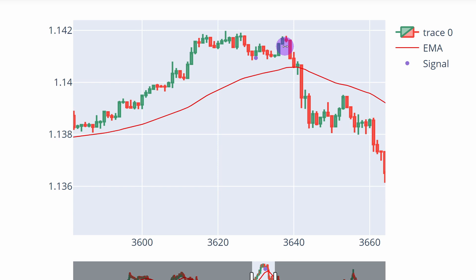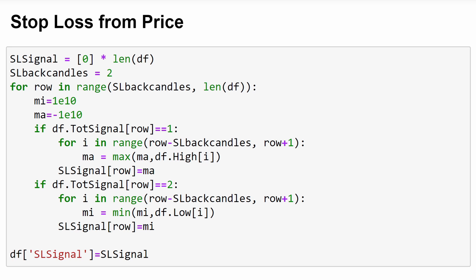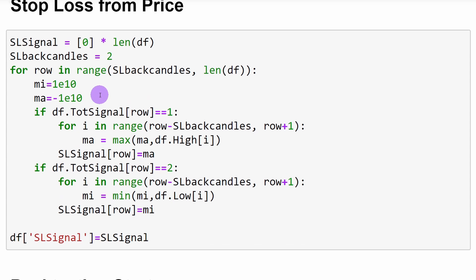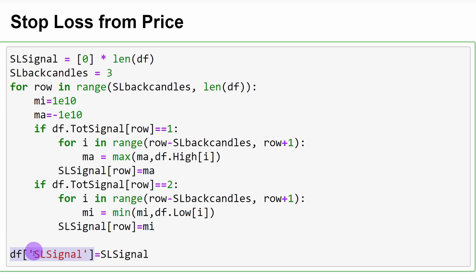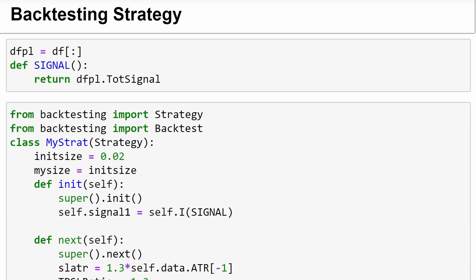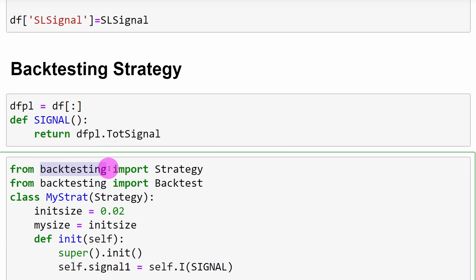Now that we've verified the code is working as intended, we compute the stop loss from the price by checking the previous candles — two previous candles plus the current candle — taking into account the highs and lows to determine where to place the stop loss. This is a variable: you can use three or four candles for more safety. Once the stop loss is set, it's added to the data frame as a column called 'sl_signal'. Then we proceed to backtesting using the backtesting.py package.